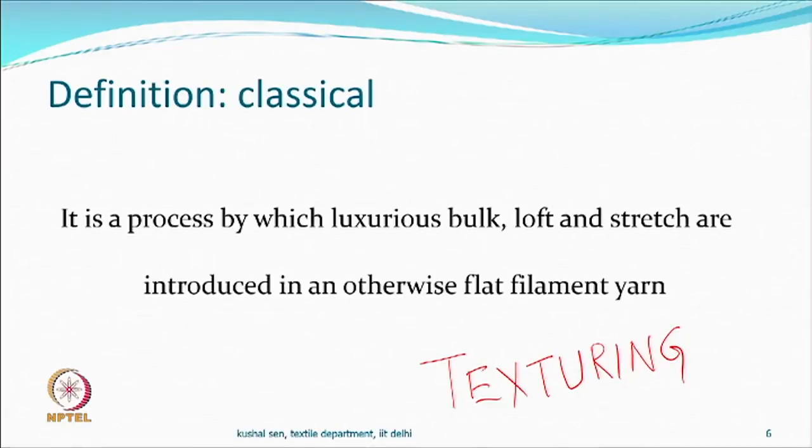Synthetic fibres like polyester and nylon are generally flat, and flat surfaces were considered not very nice, particularly in garment and apparel applications. When nylon 6,6 — the first synthetic filament to come to market — arrived, people were excited but found that water absorption, retention, and sorption capacities were not so good. Something had to be done, and therefore this particular process we call texturing was developed. It is a process by which luxurious bulk, loft, and stretch are introduced in an otherwise flat filament.